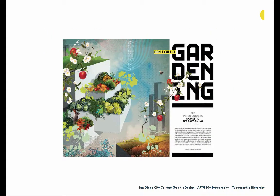Here's a great example of this. 'Don't call it gardening' — so we have 'gardening' and 'don't call it,' those are clearly the primary type. Then we have some secondary type: 'The Wired Guide to Domestic Terraforming.' Then we have a paragraph where the story actually begins — that would be an example of tertiary type. Then we have more secondary type with 'essay by' and 'illustrations by.' It's a great, simple example of how the system evolves.